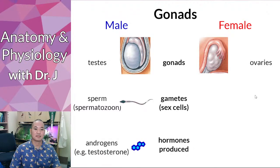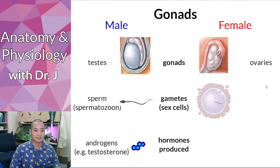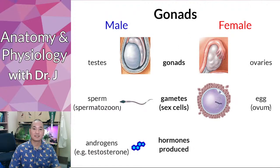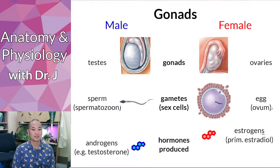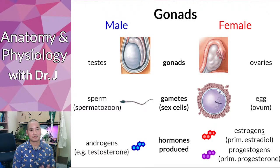Let's go on to female anatomy. Female gonads are the ovaries, analogous to the testes. The female gamete or sex cell is the egg, also known as ova. The two sets of primary female hormones are the estrogens and the progestogens, including progesterone.